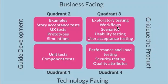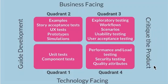Then quadrant four is performance and load testing, security testing, and quality attributes. These are technology facing, and pretty much more inclined toward security as well as toward creating the product. So this is how it looks.